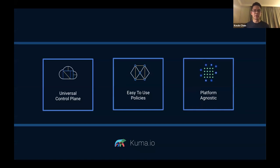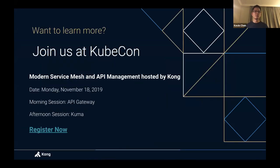To summarize: Kuma is that universal control plane that can help you configure all your data planes, regardless of whether it's Kubernetes or universal mode. The policies are easy to use — people can get up and running quickly and enforce policies across their mesh. It's also platform agnostic. Today we demonstrated Kuma on Kubernetes because this is a CNCF webinar, but we will have tutorials on deploying it in universal mode as well. We will be at KubeCon NA — join us at the co-located event or swing by our booth.